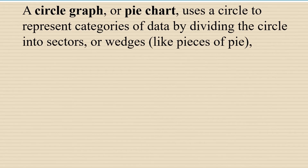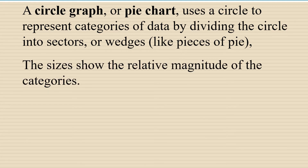A circle graph or pie chart uses a circle to represent categories of data by dividing the circle into sectors or wedges like pieces of pie. The sizes show the relative magnitude or size of the categories.